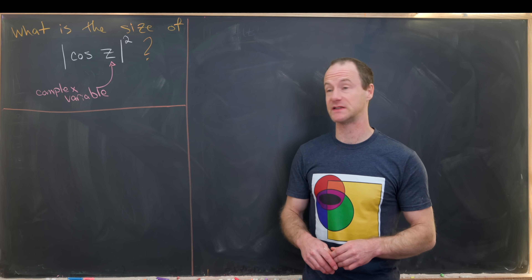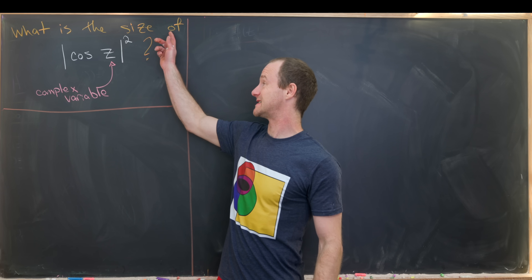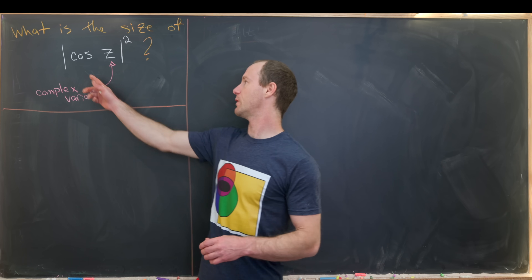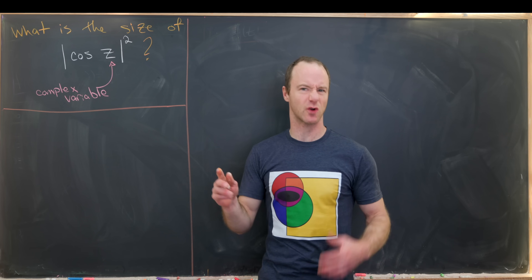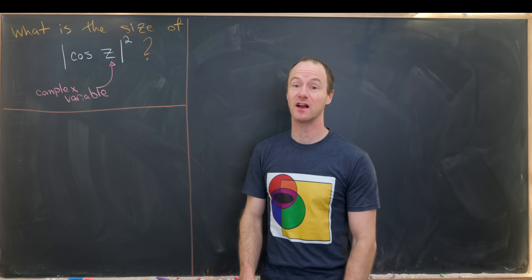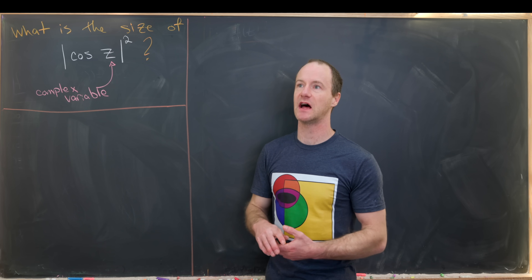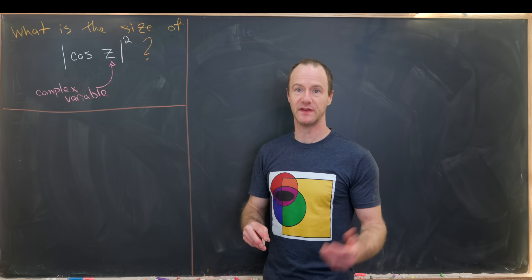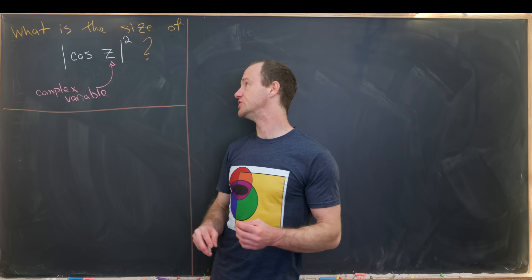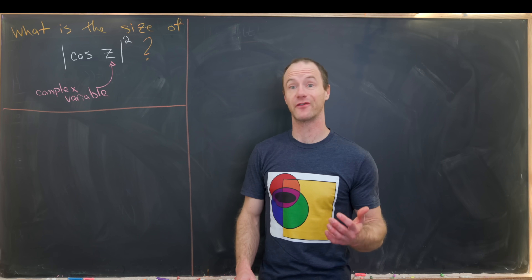We're building a whole course on complex analysis right now. Our goal here is to find the modulus of cosine of z squared — really we want the modulus of cosine of z, but we'll square it so everything looks nice. This is a complex variable. For a real variable, cosine lies between negative one and one, so will that be the same for a complex variable? Let's find out. To do that, we need to figure out what we mean by cosine evaluated at a complex number.